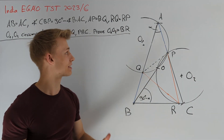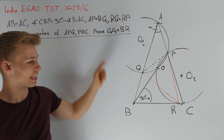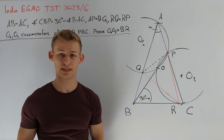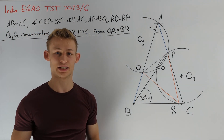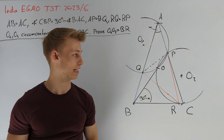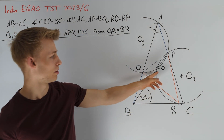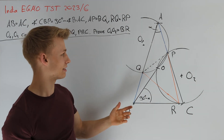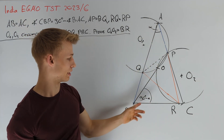We want to use the condition that AP equals BQ. Every time we have two segments with equal lengths it's a good idea to search for congruent triangles. In this case the point O is really nice because it tells us that AO equals OB.